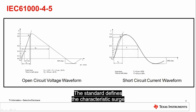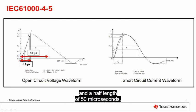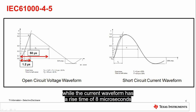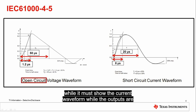The standard defines a characteristic surge as both a current waveform and a voltage waveform. The voltage waveform has a rise time of 1.2 microseconds and a half length of 50 microseconds, while the current waveform has a rise time of 8 microseconds and a half length of 20 microseconds. The surge tester must show the voltage waveform when the outputs are open circuited, while it must show the current waveform while the outputs are shorted.